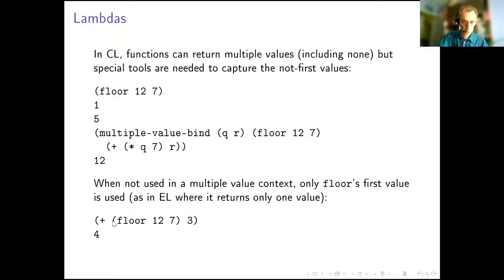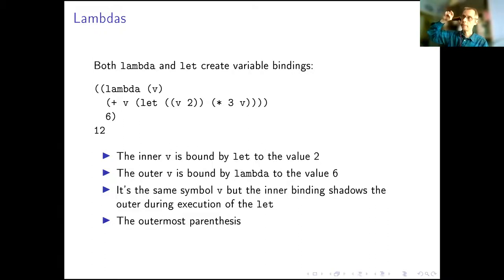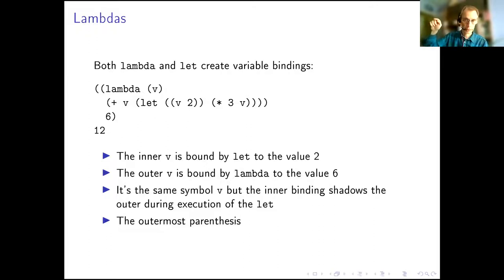If you say plus (floor 12 7) 3, then (floor 5 7) gives 1 and the remainder value 5 gets ignored — unless you use multiple-value constructions to capture it. Going back to the lambda calculus slide: lambda x.x substitutes a value, so lambda creates a binding just like let does. If a lambda expression is the first part of a list and gets evaluated, the variable v gets bound to whatever is passed in as the argument.